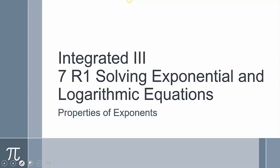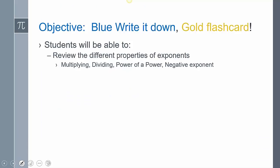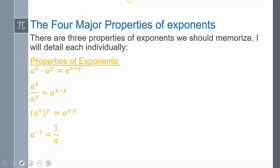Before we get into that we're going to do some review of the different properties of exponents, including multiplying, dividing, taking a power of a power, and negative exponents. These are going to be the four major properties we'll use. When we get into the properties of logarithms, we'll see how these properties coincide. We should write these down in our notes and make flashcards — these are properties we need to have memorized.